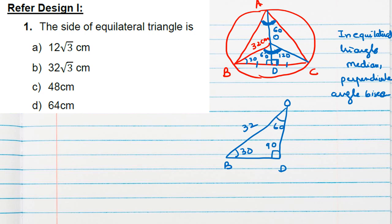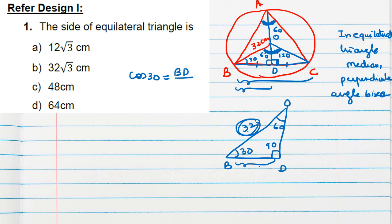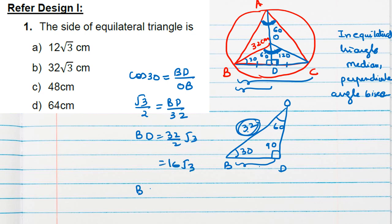In triangle OBD: angle at B is 30°, OB is the hypotenuse (radius = 32), and the angle at D is 90°. To find BD, we use cos 30° = BD / OB. So cos 30° = √3/2, giving BD = 32 × (√3/2) = 16√3. Since AD is the median, BC = 2 × BD = 2 × 16√3 = 32√3 cm, which is option B.